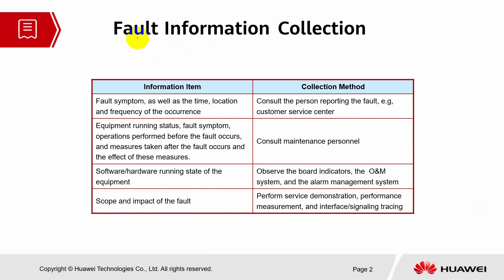Fault information collection is divided into a few categories. For the information item, the fault symptoms we need to collect will be related to time, location of the problem, and frequency of occurrence. For the collection method, we need to consult the reporting person or customer service based on the trouble ticket. For equipment running status, we need fault symptoms, operations performed before the fault occurs, and measures taken before and after the fault — consulting with maintenance personnel on site.